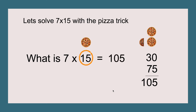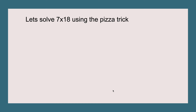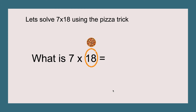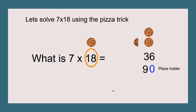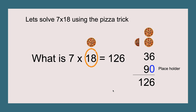Let's solve seven times eighteen using the pizza trick. This is our first two-digit even number. Eighteen times two equals thirty-six. We add a placeholder zero because thirty-six has more than one digit. The half of eighteen is nine, so putting it next to the placeholder zero makes ninety. Thirty-six plus ninety equals one hundred and twenty-six, so seven times eighteen equals 126.